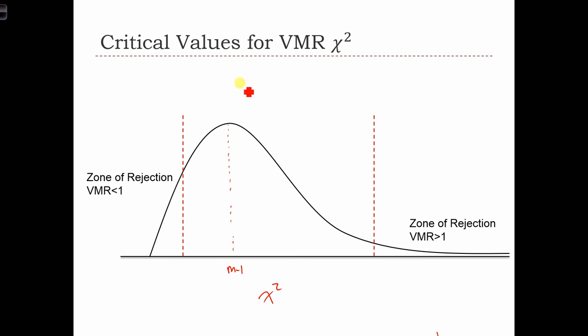Because remember, chi-squared equals M minus 1 times VMR. And under the null hypothesis, H0 is that VMR equals 1. So in that case, the chi-squared is just M minus 1, and that's this location over here. And what we are going to look for are significant differences away from this location, away from this value of chi-squared.